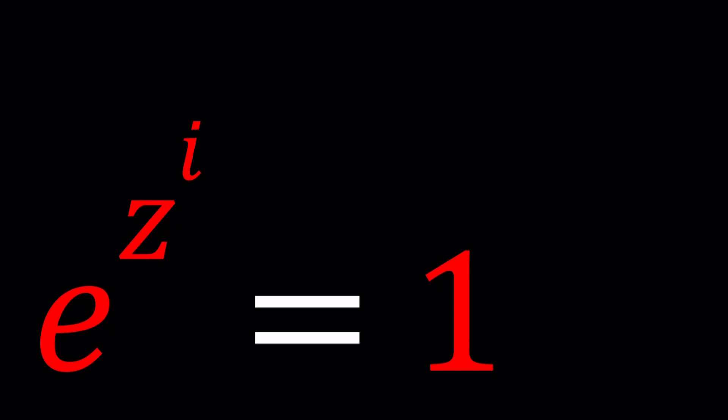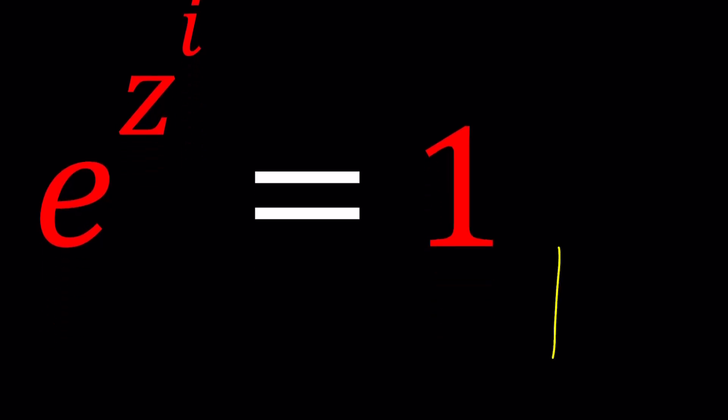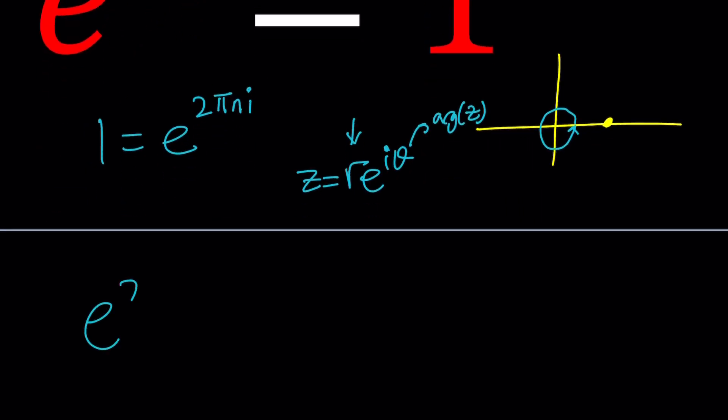First I want to write 1 as an exponential using Euler's formula. Since the modulus of 1 is 1 and its argument is 0 radians or 2 pi radians or any multiple of 2 pi radians, we can write it as e to the power 2 pi n i. Because e to the i theta multiplied by r gives you a complex number in polar form. R is the modulus but our modulus is 1, because we're talking about 1. And theta would be the argument of z which is the angle. Let's go ahead and replace 1 with that.